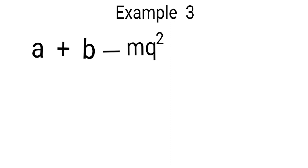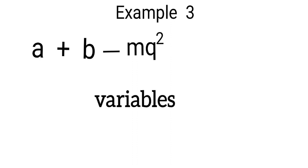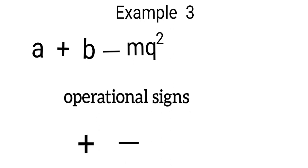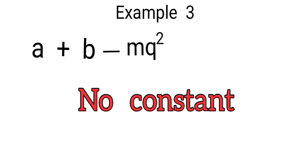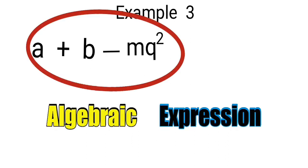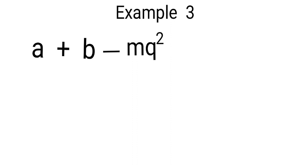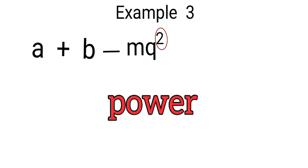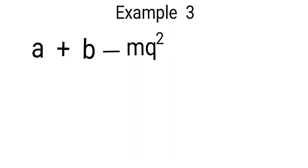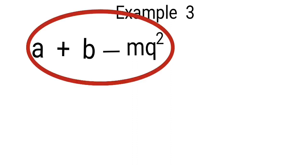Example three: a plus b minus ml squared. The variables are a, b, m, and l. The operational signs are addition, subtraction, and multiplication. There is no constant in example three, yet it is still an algebraic expression — confirming that a constant is not required. The number 2 at the top right of l is referred to as a power (exponent). Since we have variables and operational signs, example three is an algebraic expression.